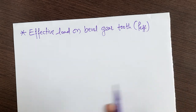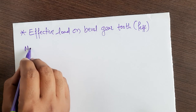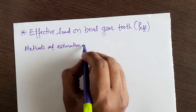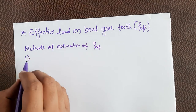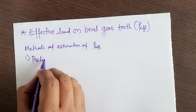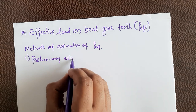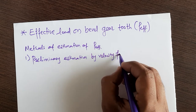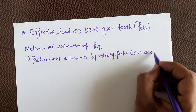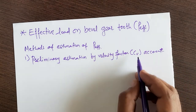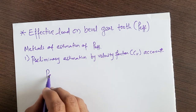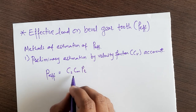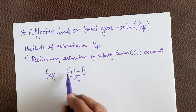There are two methods of estimation of P_effective. The first method is preliminary estimation by velocity factor. According to this method, P_effective is given by: P_eff = (CS × CM × PT) / CV, where CS is the application factor (also called service factor).